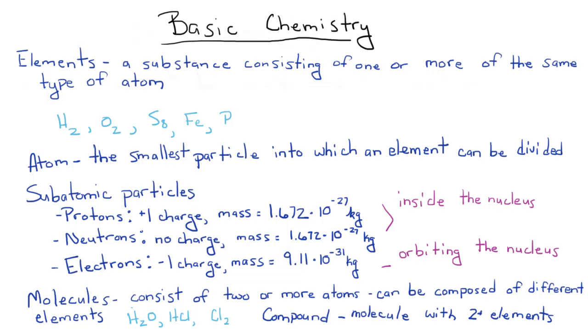Atoms can come together to form what are called molecules. Molecules consist of two or more atoms. These atoms can be the same type of element or they can be different elements. An example of a molecule would be water, hydrochloric acid, chlorine, molecular chlorine.